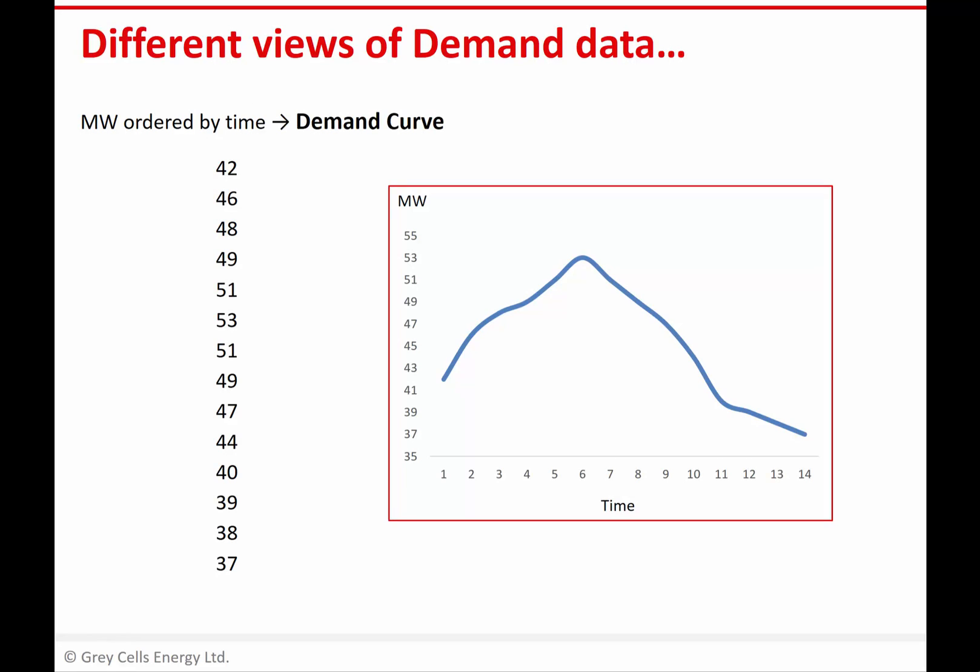Presented with power demand data, such as this hypothetical list of data on the left, so far we've been plotting power on the y-axis against time on the x-axis, plotting the power data in the order that it occurs. So if we read that list of numbers from earliest at the top to latest down at the bottom, we end up with a plot like the one on the right, and in power terms that's what we'd call a demand curve.